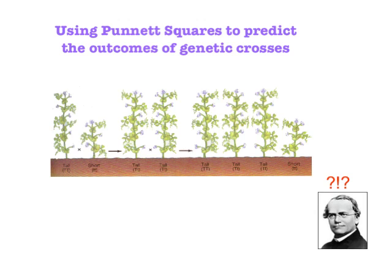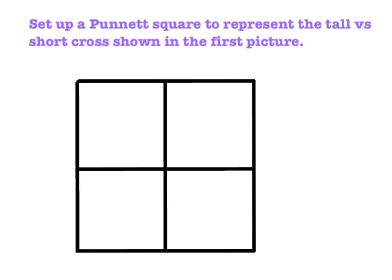Today's video is designed to help you figure out how to use a handy little tool called a Punnett square to set up, interpret, and predict the outcomes of genetic crosses. Unlike Gregor Mendel, when we want to figure out what's going to happen in a genetic cross, we don't have to breed thousands of pea plants and count up numbers. We have a handy little tool that looks like a window pane. It's called a Punnett square.